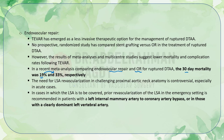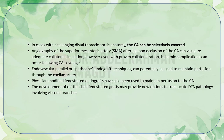The need for left subclavian artery revascularization in challenging proximal aortic anatomy is controversial, especially in acute cases. When the left subclavian artery is to be covered, prior revascularization in the emergency setting is recommended in patients with a left internal mammary artery to coronary artery bypass or with a clearly dominant left vertebral artery. In cases of challenging distal aortic anatomy, the celiac artery can be selectively covered; however, angiography of the superior mesenteric artery after balloon occlusion of the celiac artery can visualize collateral circulation, and even with proven collateralization, ischemic complications can occur.